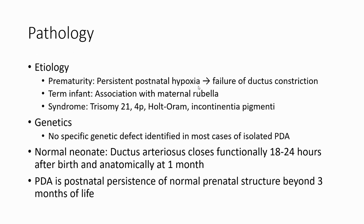Etiology: First is prematurity — persistent postnatal hypoxia causing failure of ductus constriction. This is why it usually happens in premature infants, as the hypoxia causes failure of ductus constriction. It is also associated with maternal rubella, causing failure of ductus constriction. In trisomy 21, 4p, and other chromosomal anomalies, it is sometimes related to specific genetic defects identified.